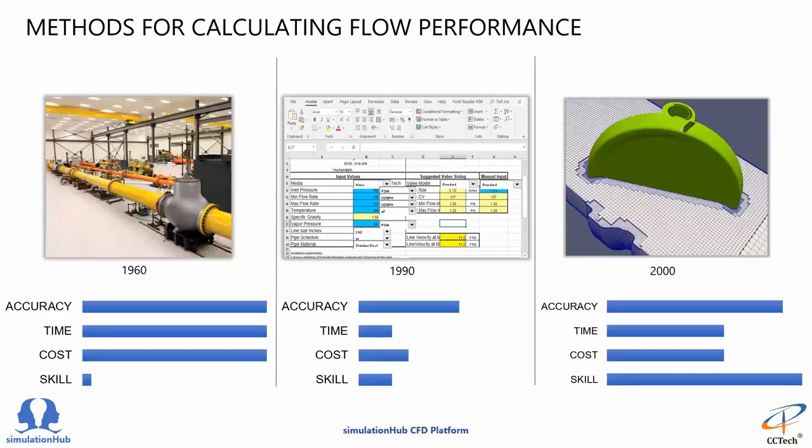The three most widely used Cv calculation methods in the industry are the laboratory flow loop testing, then Excel based calculators which reduce time but also reduce accuracy, and computational fluid dynamics, which is highly accurate compared to experimental flow loop testing, but comes with a lot of skill sets and expertise needed for CFD.